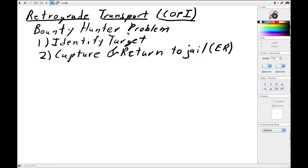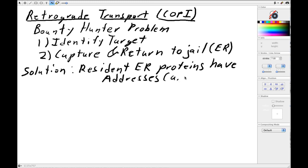So what I'm going to focus on initially is, how do you identify the target? How do you identify proteins that have escaped the ER, but whose primary residence is the endoplasmic reticulum? So the solution to this problem, as with many things, are sorting signals. So resident ER proteins have addresses. And by addresses, I mean amino acid sequences. So what are these tags that allow proteins to be recognized as ER resident proteins?